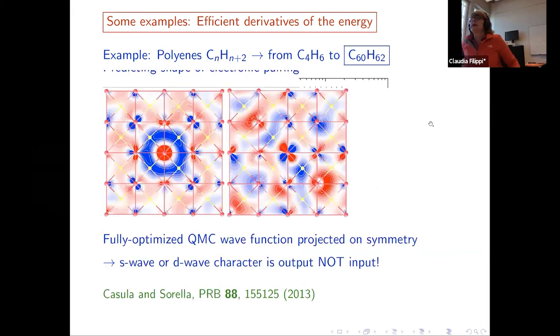Okay. So the point that I want to make is that if you are willing to actually do a quantum Monte Carlo calculation, you're also now able to compute interatomic forces and to optimize your structure. Here is another example from the group of Casula and Sorella. And here is more a solid state example. And what they were doing, they were using a quantum Monte Carlo wave function to predict the shape of electronic pairing in iron selenide. So this pretty plot of projection on different symmetries - the nature of the character of the wave function is not an input of the calculation, but it's an output of the calculation since all parameters are fully optimized.